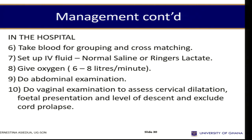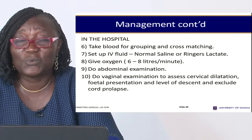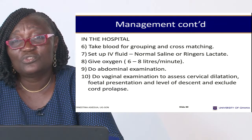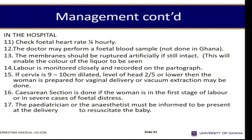Do abdominal and vaginal examination. Assess cervical dilatation: is the woman fully dilated? What is the presenting part? What is the level of descent? Is there any cord prolapse? Check the fetal heart rate. The doctor may perform fetal blood sampling — not usually done in Ghana. If membranes are intact, rupture them artificially to allow amniotic fluid out and try to expedite labour. Monitor closely with the partograph, with more frequent recordings than normal.